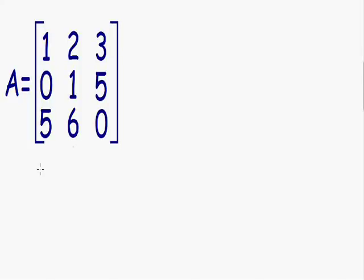So now we're going to find the inverse of a 3 by 3 matrix. Here we have a 3 by 3 matrix A. The first thing we're going to do is find the determinant of this matrix A. The way I like to find the determinant is by copying the first two columns and placing them on the right side of the matrix.